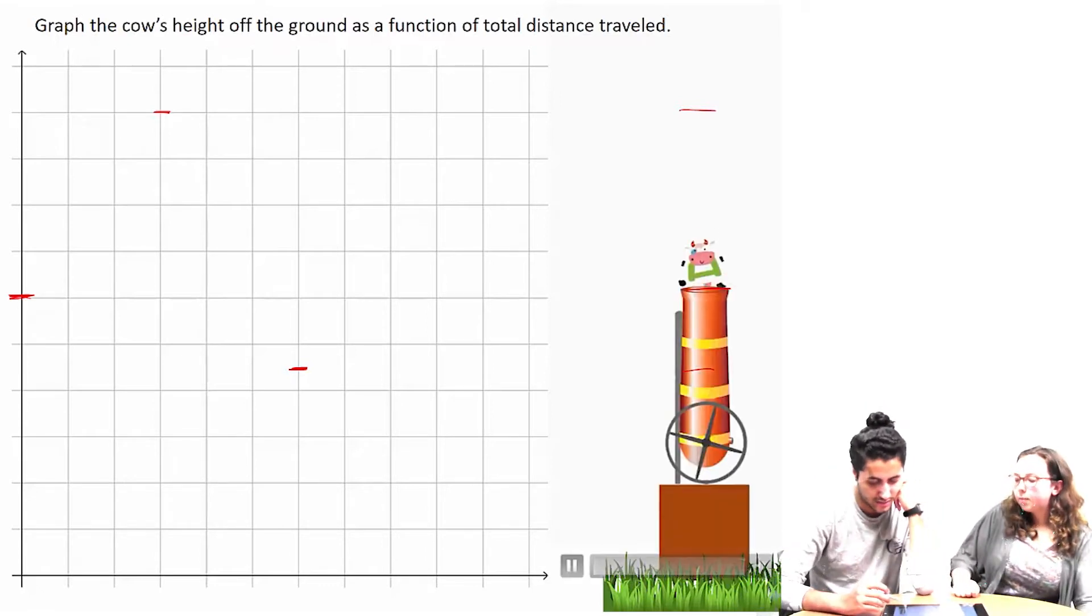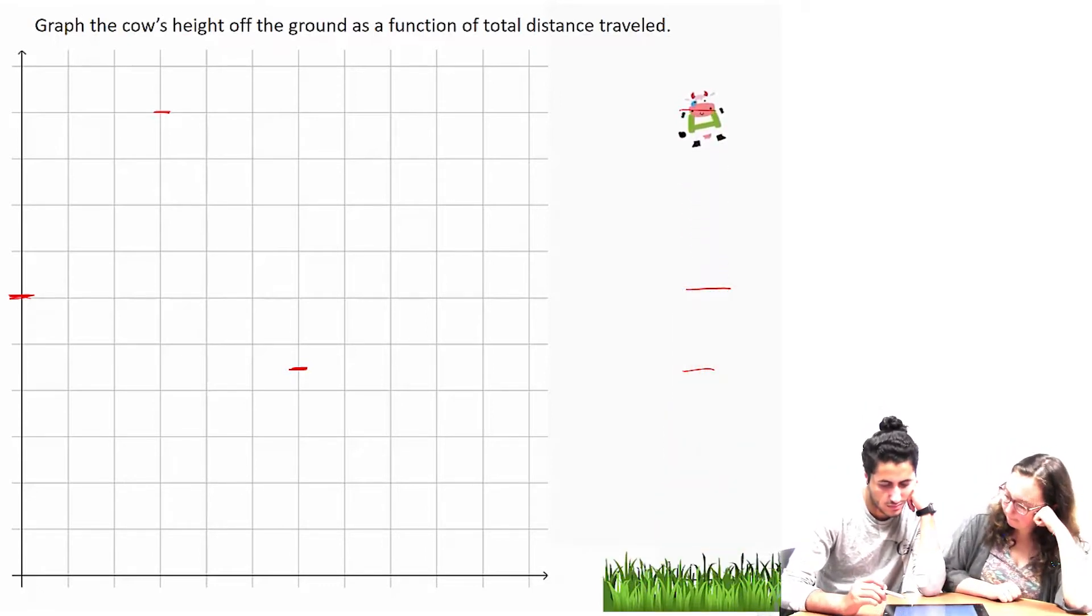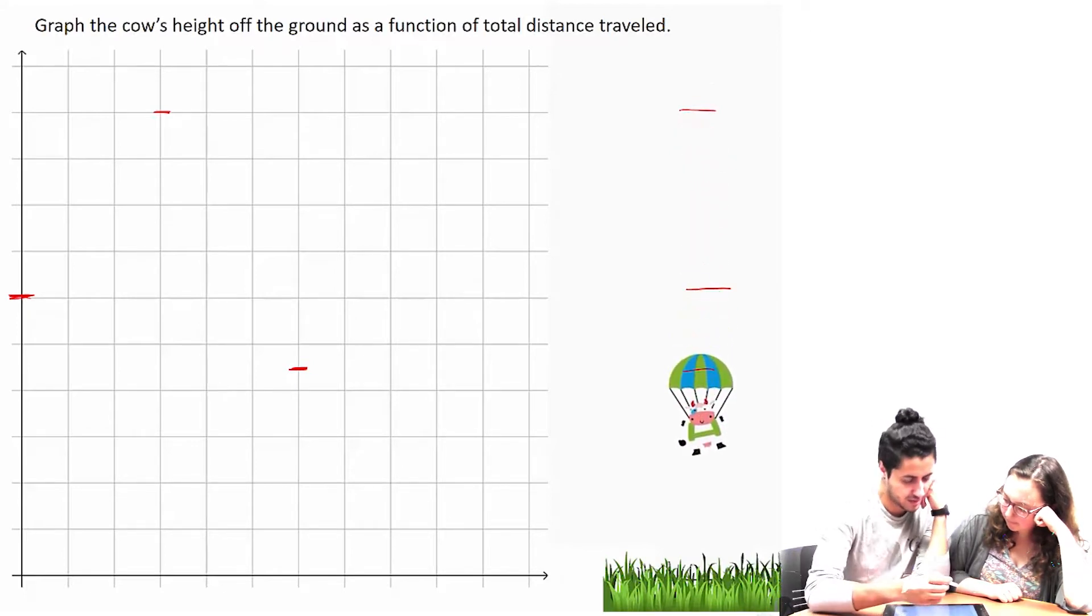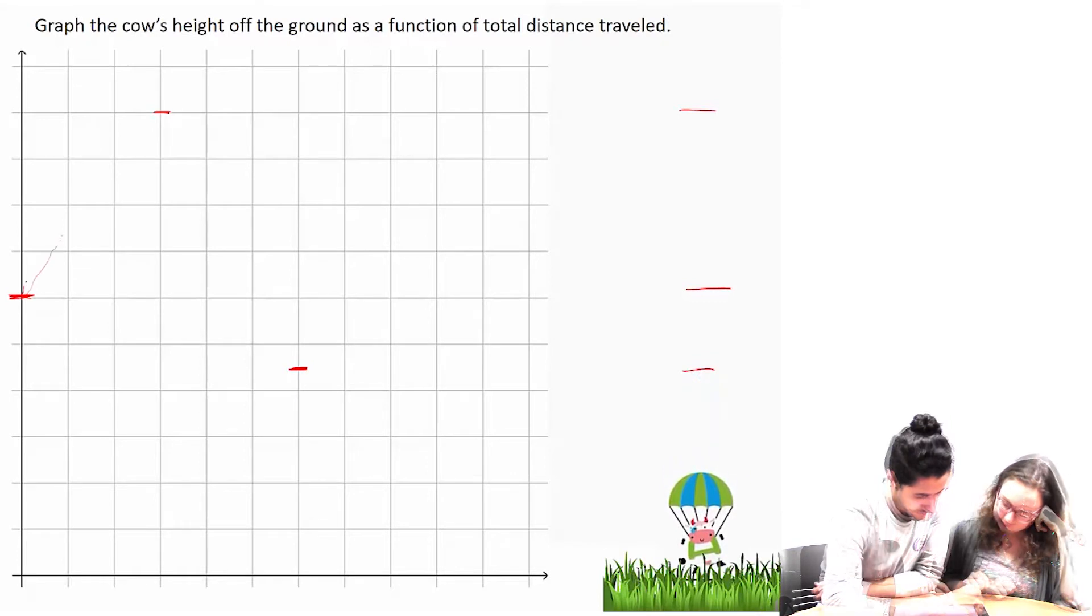I'm thinking if you watch it, it goes up, slows down, and then goes all the way down, slows down because of the parachute. So then, you're going to have something along the lines.